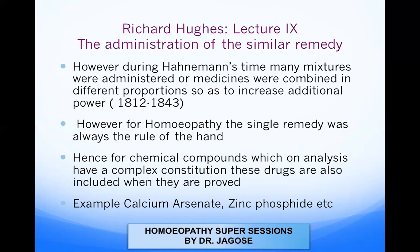Mixtures consisted of many remedies mixed together to make them more potent. However, in homeopathy, the single remedy was always the rule. For chemical compounds which on analysis have a complex constitution, these drugs are also included when proven. For example, calcium arsenate and zinc phosphide were proven on healthy human beings despite having a complex constitution.